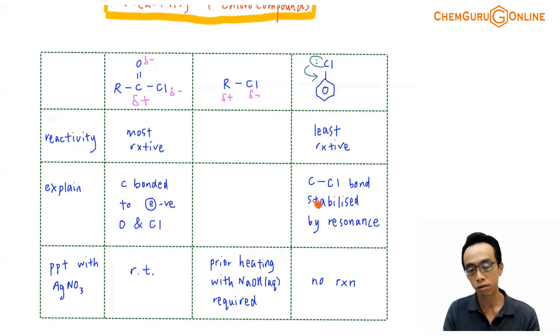The conclusion that we have is if it is chlorobenzene, the C-Cl bond is stabilized by resonance. In terms of the reactivity, more or less we know. Explanation, we should also be familiar with that. In fact, we can make use of how it reacts with AgNO3 to bring out the differences in terms of the reactivity.